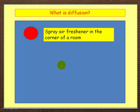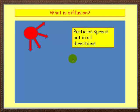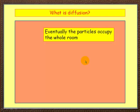Imagine standing in a room and spraying air freshener in the corner. Does the air freshener just stay in that one corner? No, it doesn't. The particles will spread out in all directions until the air freshener smell occupies the whole room. This means the particles have spread out and occupied all of the available space.